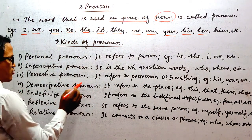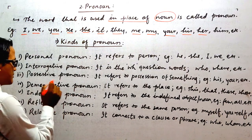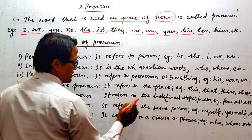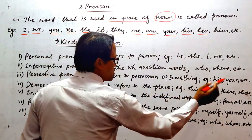Basically, Demonstrative Pronoun. What is demonstrative? It refers to the place. Example: this, that, these, those, etc.